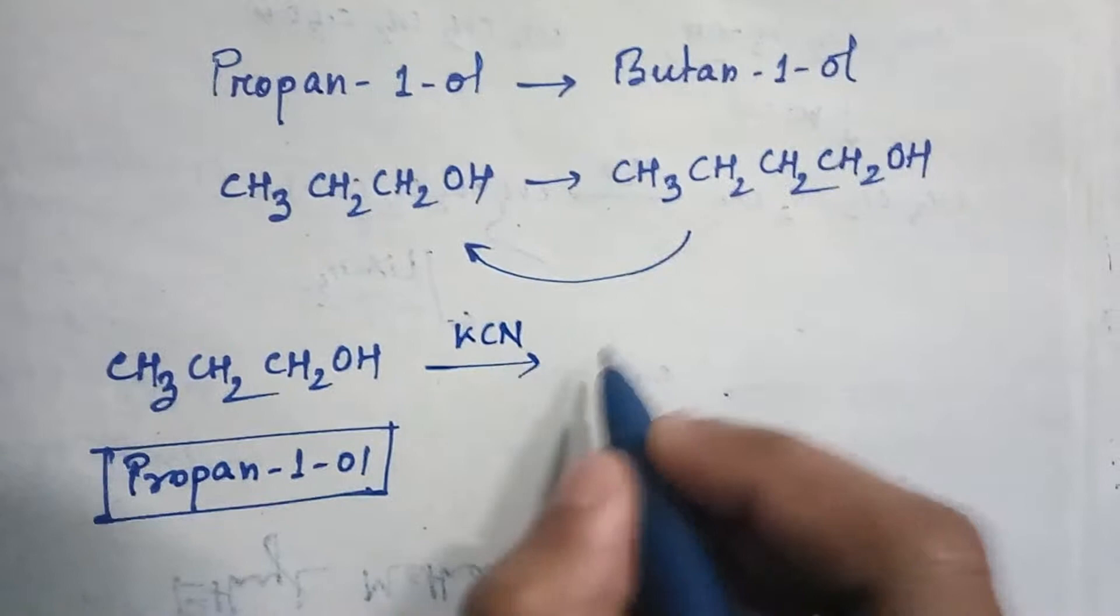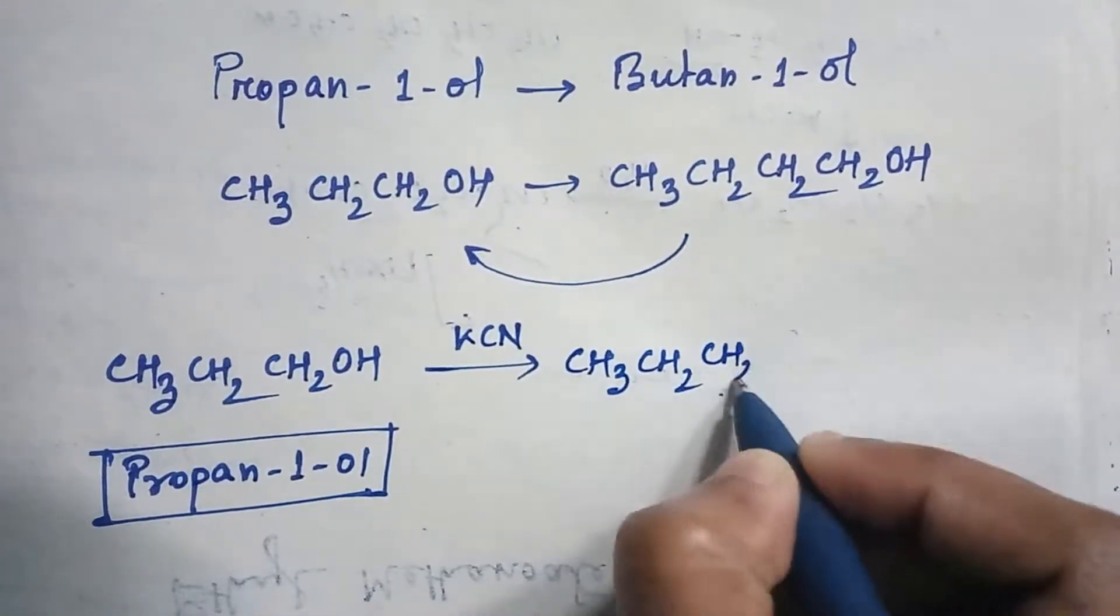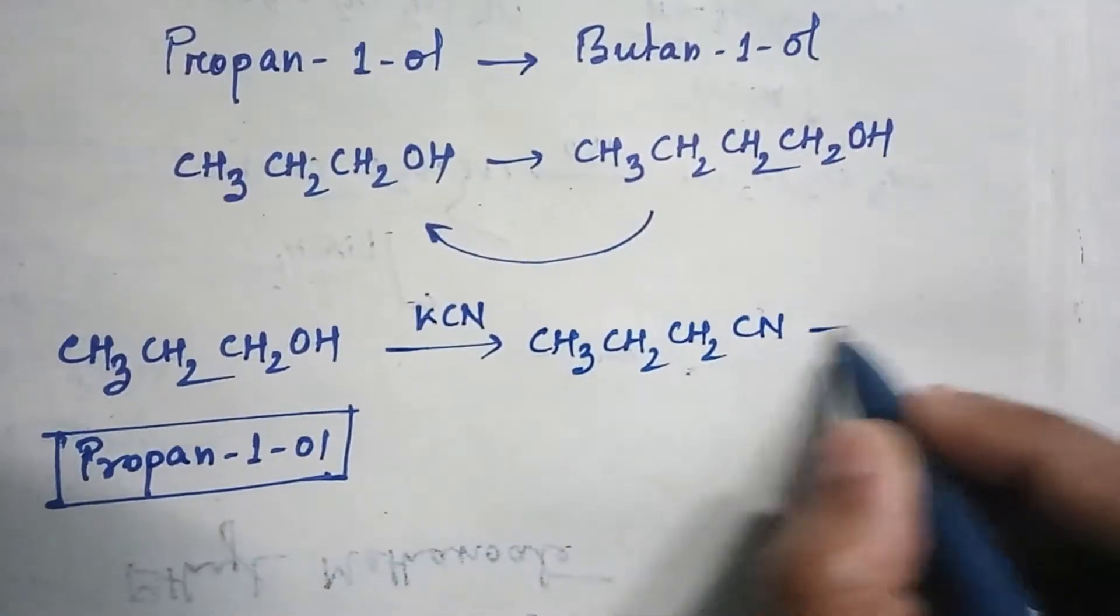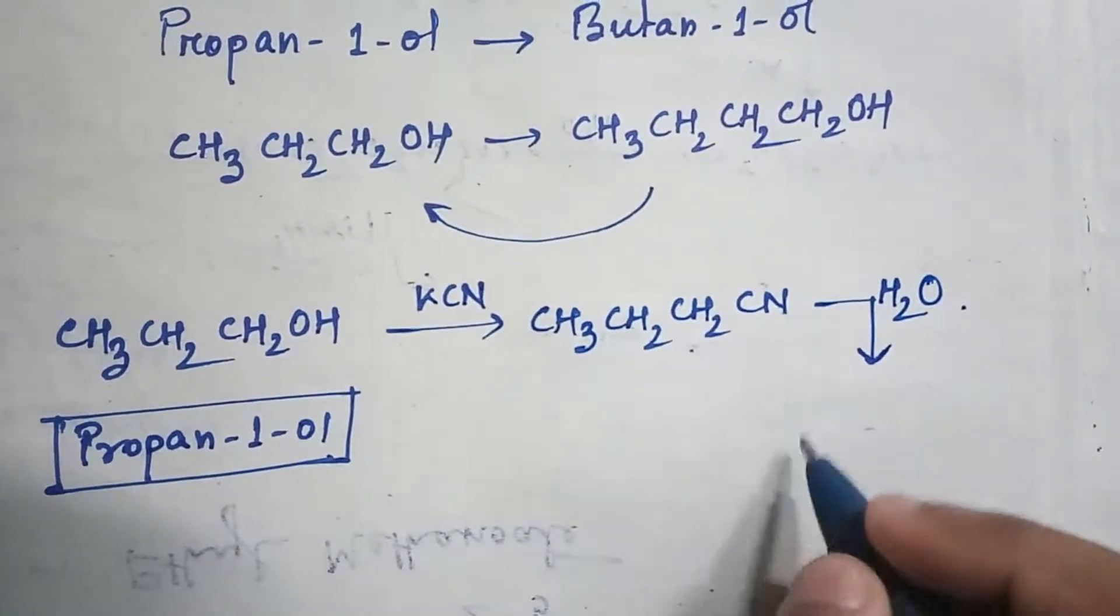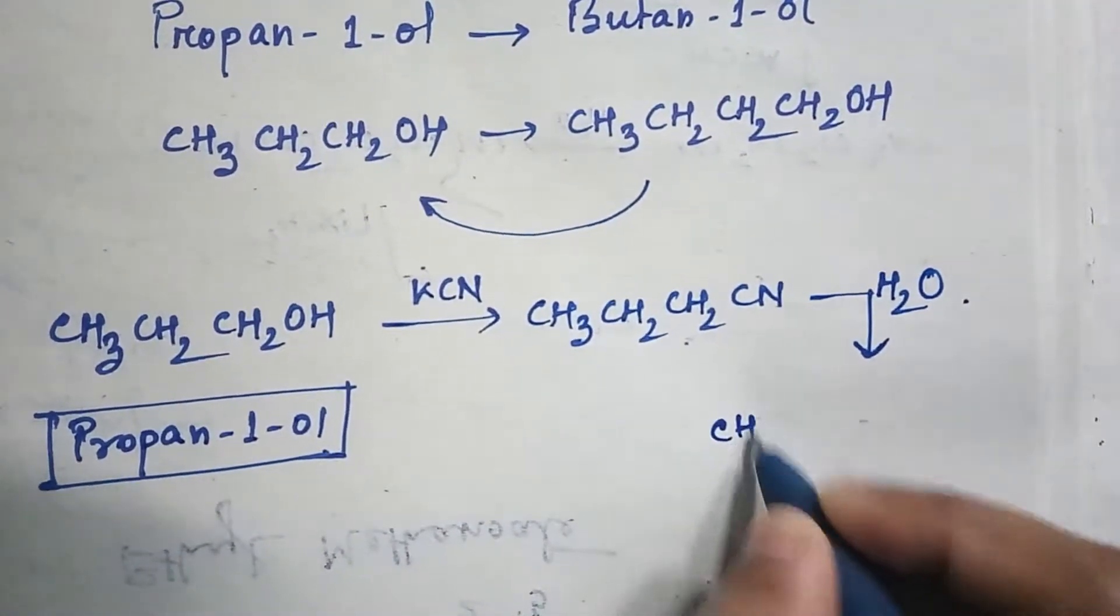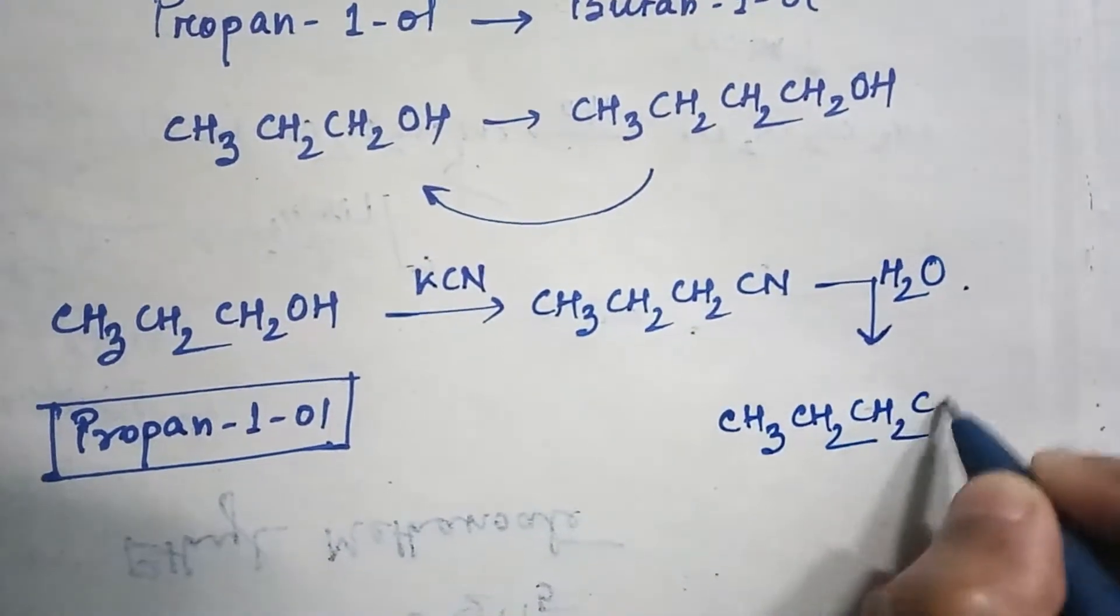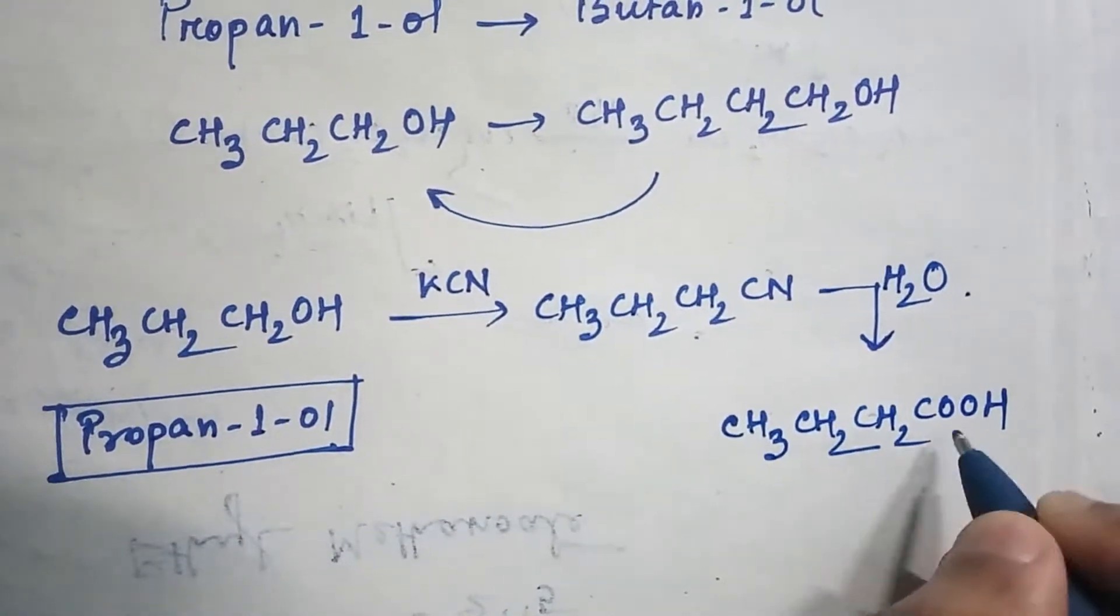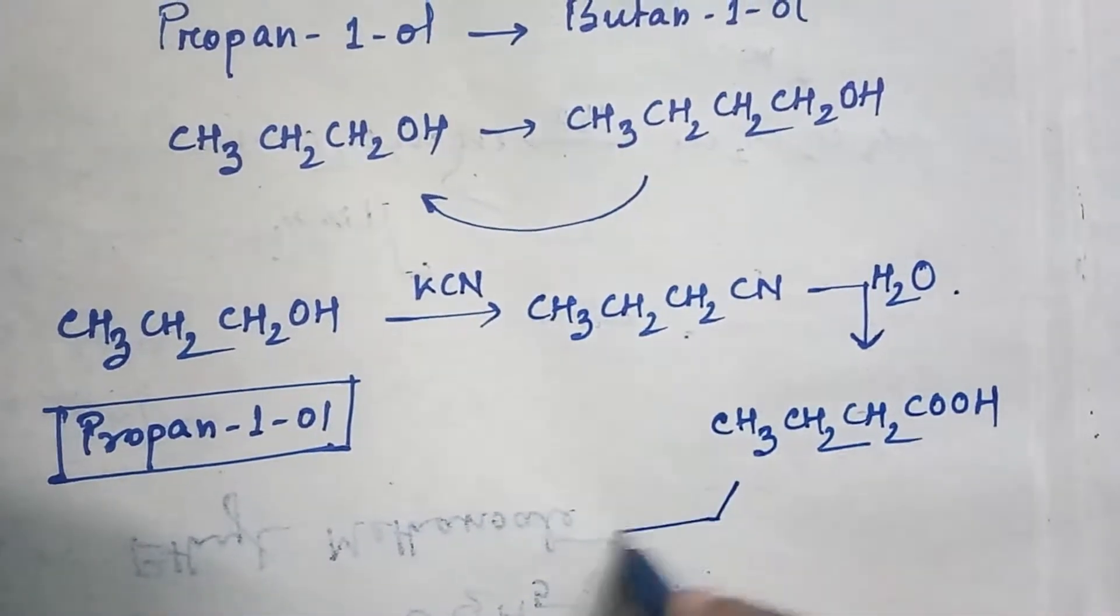It will be CH3-CH2-CH2-CN. Now if you add water, then it will convert into acid. The product will be CH3-CH2-CH2-COOH - this is butanoic acid.